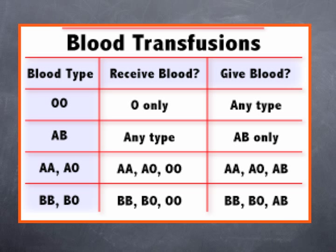Blood type AB can receive blood from anybody — O, A, B, or AB. However, they can only give blood to other AB recipients. They cannot give to A, cannot give to B, and cannot give to O.